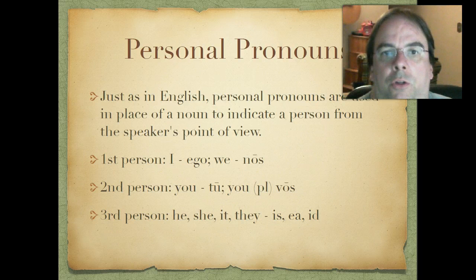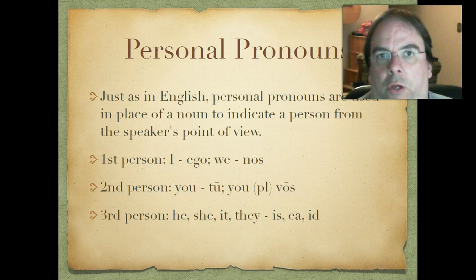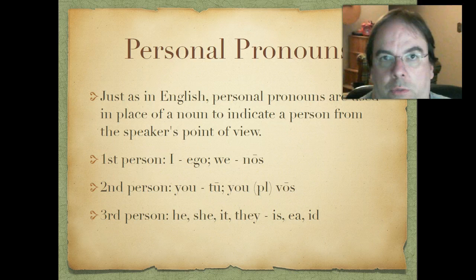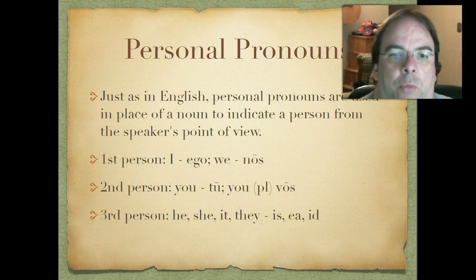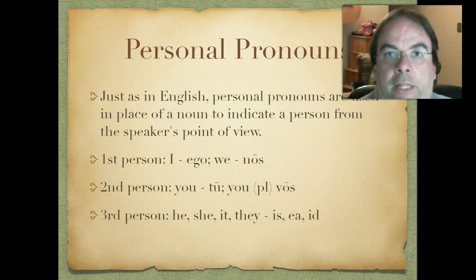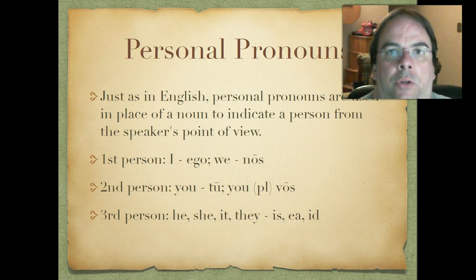We're going to be finally introduced to personal pronouns in Latin. Just like in English, personal pronouns are used in place of a noun to indicate a person from the speaker's point of view. In English we have first person personal pronouns like I and we, which correspond to the Latin ego and nos — both of those are going to decline just like any other noun. Second person is you, and third person is he, she, or it, and in the plural they. In Latin the third person is the irregular is, ea, id, which we'll decline too.